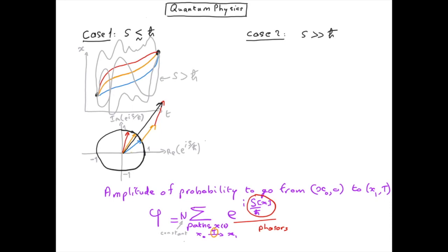And all these paths will then end up with phasors in all possible directions. Now, when we sum all these crazy paths, so to say, we see that they will all cancel each other because a path with a direction, for instance, to the northeast in the complex plane will be cancelled by the path with a direction to the southwest, and so on.